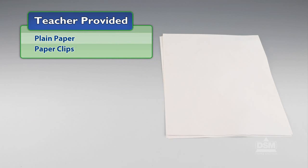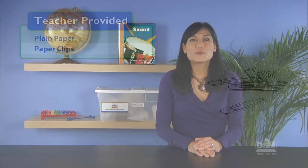You will also need to provide plain paper and paper clips. To prepare for Session 1, make a copy of Activity Sheet 1, Parts A and B for each student.